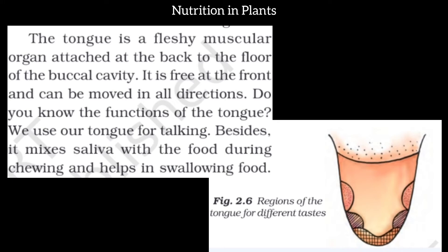First, the tongue helps us to talk. Second, it helps mix saliva throughout the mouth with food. The tongue also has taste buds in different areas — the front portion detects sweet, the side portions detect sour, and the back area detects spicy or bitter tastes.